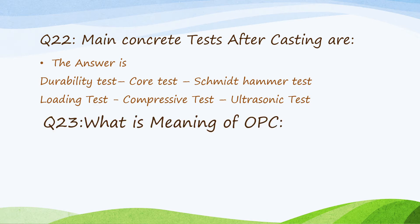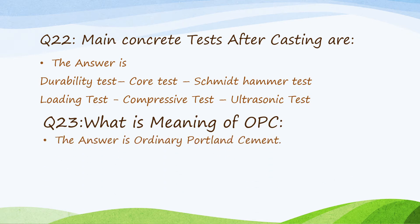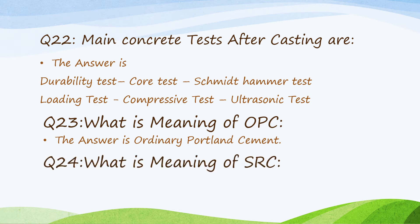Question 23: what's the meaning of OPC? Ordinary Portland cement. Question 24: what's the meaning of SRC? Sulfate resistance cement.